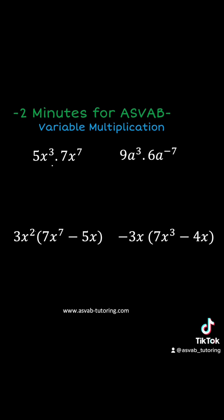If you want to multiply variables, the first thing you have to do, you have to add the exponent. So let's do that. And you need to multiply the numbers the regular way. So 7 times 5 is 30, 5x to the power 3 plus 7 is 10.